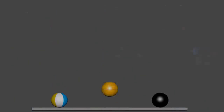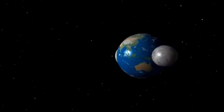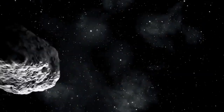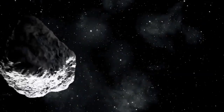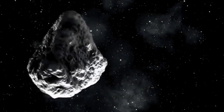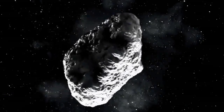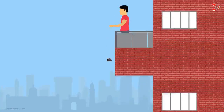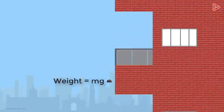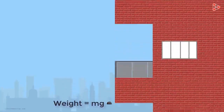Every object and every celestial body such as planets, moon, or asteroids exhibit their own force of attraction called gravity. Under gravity, every object has weight. The weight of the object is mg.